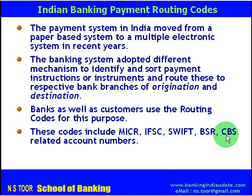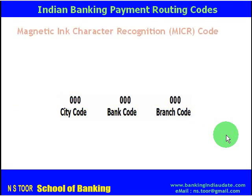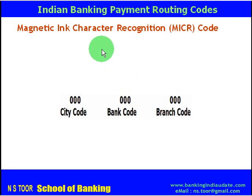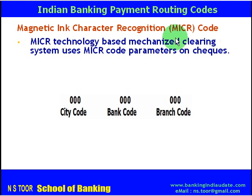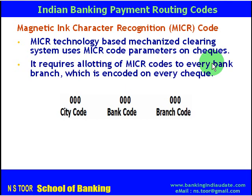First of all, we start with MICR code — that is Magnetic Ink Character Recognition code. MICR technology-based mechanized clearing system makes use of MICR code parameters on the check. Whenever transactions are undertaken via checks, they make use of MICR code parameters on the check. It requires allotting of a MICR code to every bank branch, which is encoded on the check.